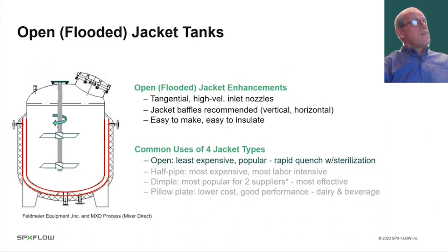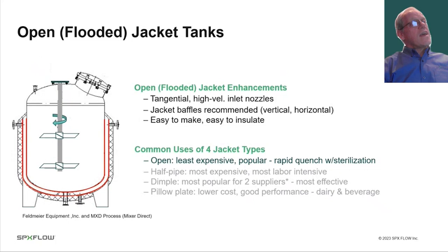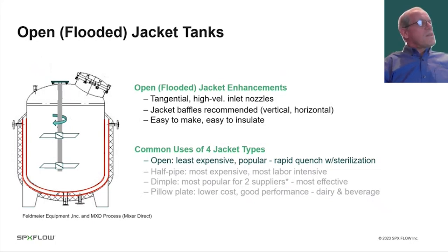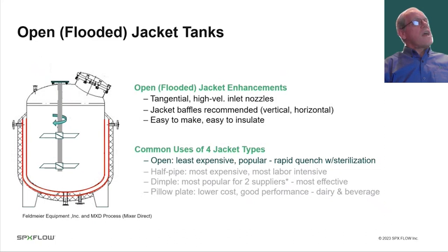The open or flooded jacket is essentially a vessel nested inside a larger vessel, with the annular space flooded with heat transfer fluid. You can add enhancements such as high-velocity inlet nozzles to increase the heat transfer coefficient, and vertical or horizontal baffles to control flow and avoid short-circuiting. This is the least expensive type of jacket and is common for applications like rapid quench with sterilization.